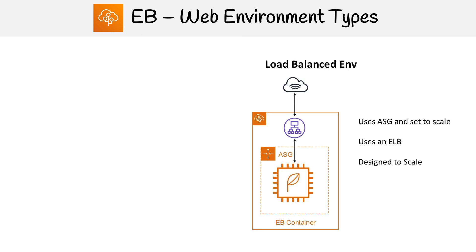The first one we have already seen is a load balanced environment. The idea with this one is that you have EC2 instances running in an auto scaling group, and that auto scaling group is set to scale. So if you get a lot of traffic coming in, it's going to spin up more instances, and when the traffic declines, it's going to remove instances.